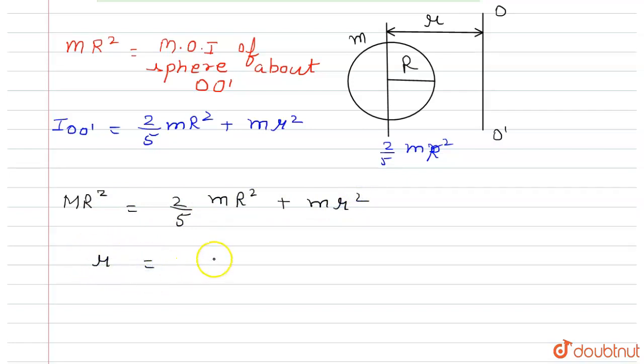Now we have to find the value of small r which is equal to R square minus two by five r square, so which is equal to 0.6 r square.